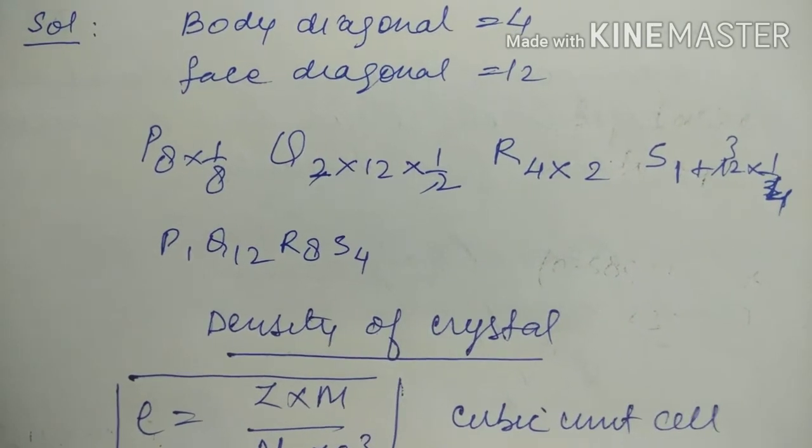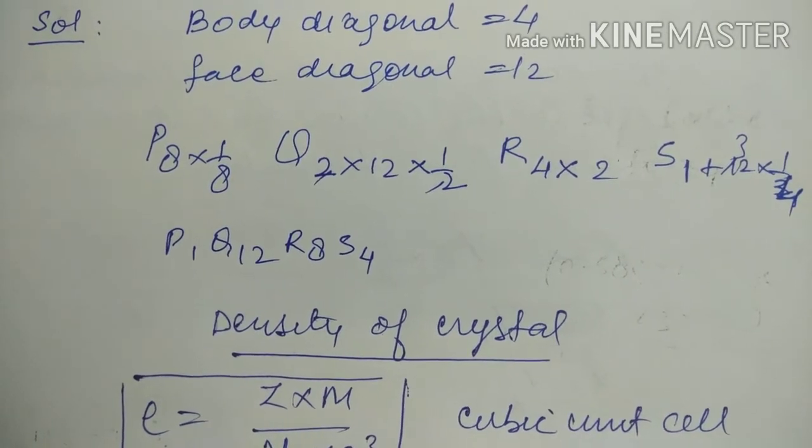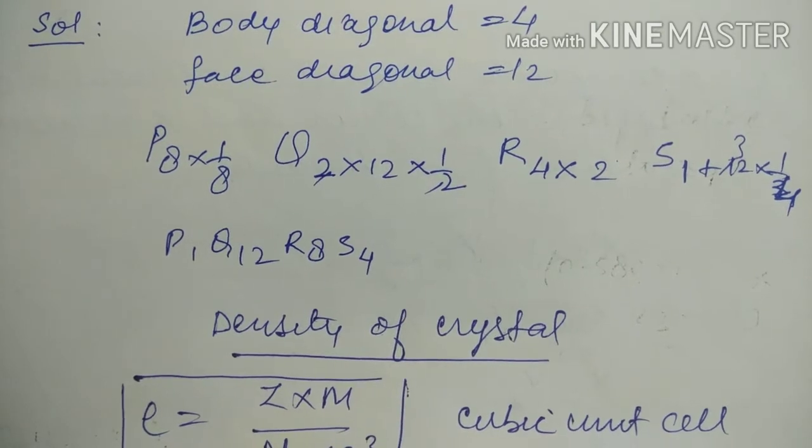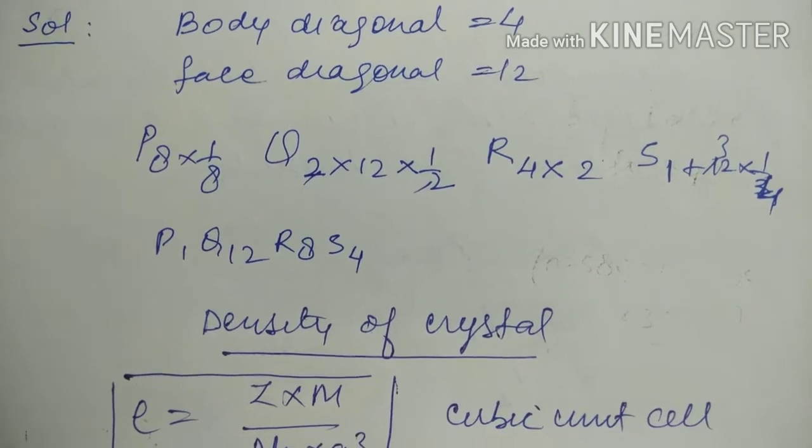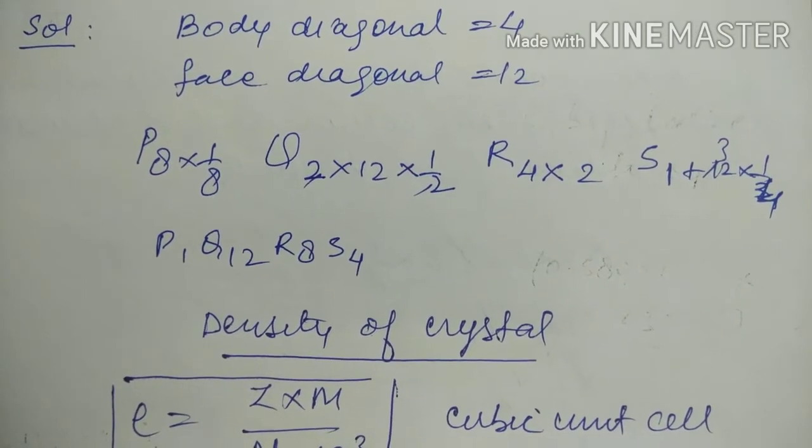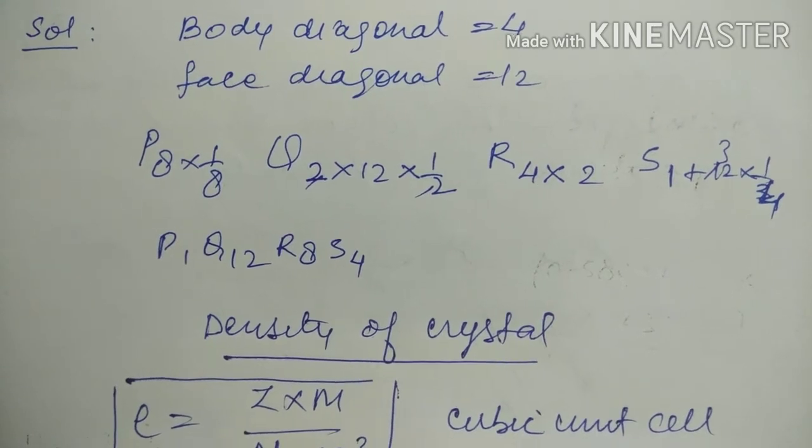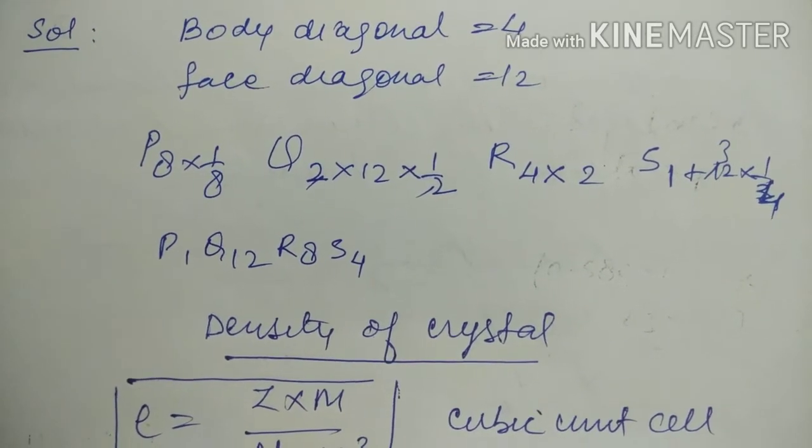Participation is 1/2, so 2 cancels, giving Q = 12. R is at body diagonal. Each atom at body diagonal means they're fully inside, no cutting, so 4 times 2 is 8. S is 1 body center plus at edges, which is 12 times 1/4, giving 3. So P is 1, Q is 12, R is 8, S is 4. This is the formula.